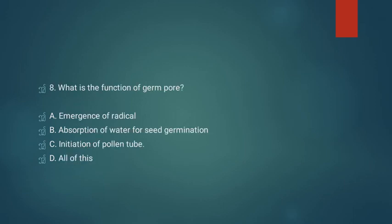Question number eight: what is the function of germ pore? Option A: emergence of radicle. Option B: absorption of water for seed germination. Option C: initiation of pollen tube. Option D: all of these. Here initiation of pollen tube is the right answer — option C is correct.